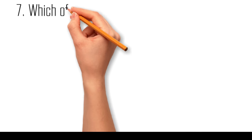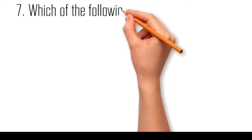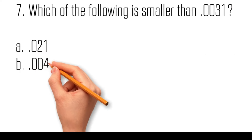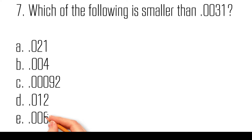Which of the following is smaller than 0.0031? Options: 0.021, 0.004, 0.00092, 0.012, 0.006. The number that is smaller than 0.0031 is 0.00092.